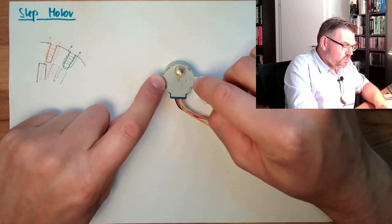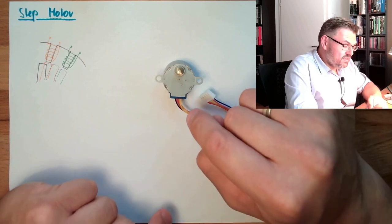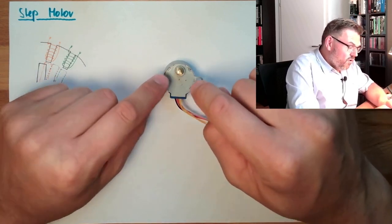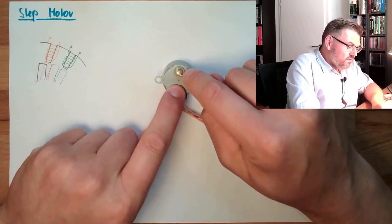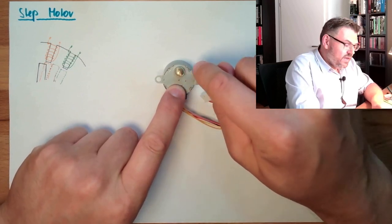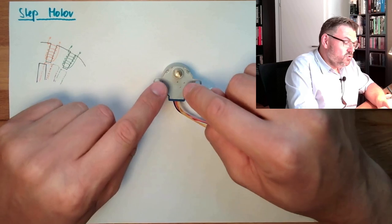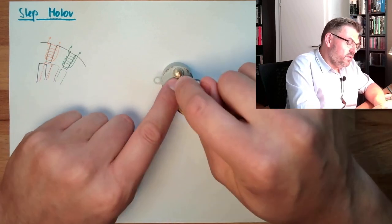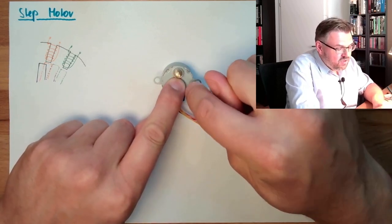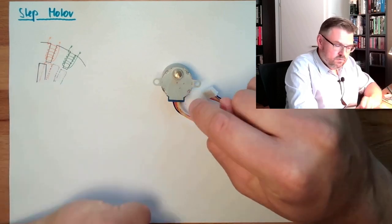This specific stepper motor even has a gearbox inside. So of course, the shaft, you see, the shaft is out of the center. So this already indicates there must be some gears. So there is also a ratio between the rotating of this shaft and the internal rotating of the rotor.